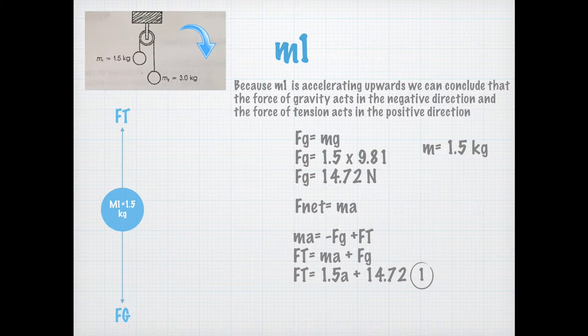Using the force of gravity we solved for obtaining 14.72 newtons and the mass of 1.5 kg, we can use Newton's second law to set up an equation for the force of tension. f net equals ma and ma equals negative fg plus ft. ft equals ma plus fg and ft equals 1.5a plus 14.72 is what we get after we subbed in all our givens.